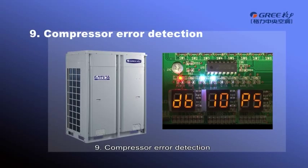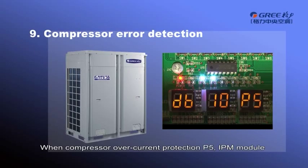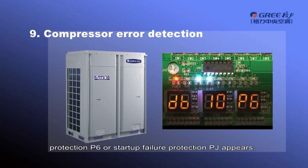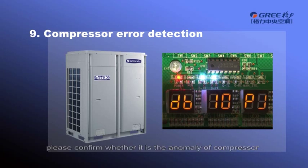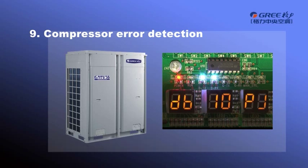Compressor error detection. When the compressor over current protection P5, IPM module protection P6, or startup failure protection PJ appears, please confirm whether it is an anomaly of the compressor or the anomaly of the IPM module. The confirmation methods are as follows.